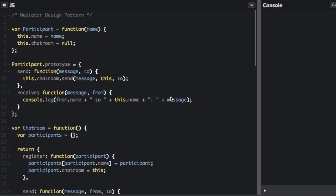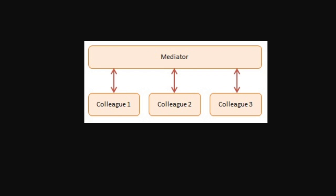The mediator design pattern is a pattern that provides a central authority through which the different components of an application may communicate. If a unit of code has too many direct relationships between components, it may be time to have a central point of control that components can communicate through.